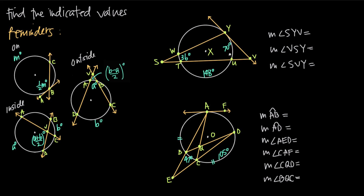Let's look at this first example. We have circle x with three lines. Line YV is tangent to the circle at point Y, and we have secant lines SY and SV. We've been told that arc WT is 36 degrees, arc UY is 70 degrees, and arc TU is 148 degrees. We need to find three unknown angle measures.